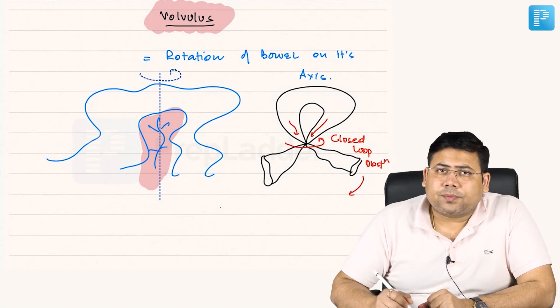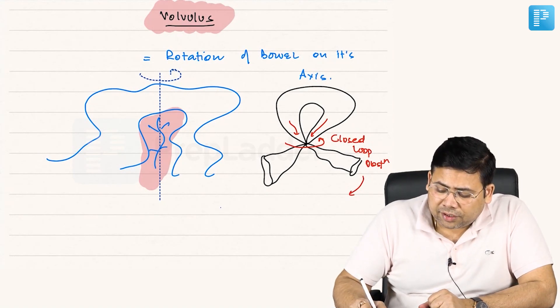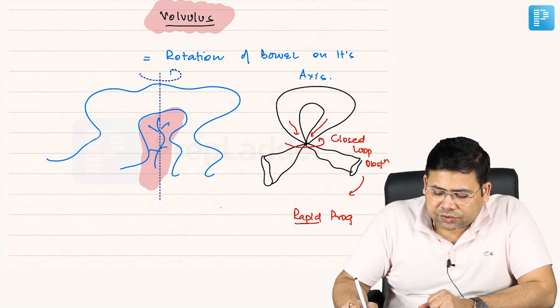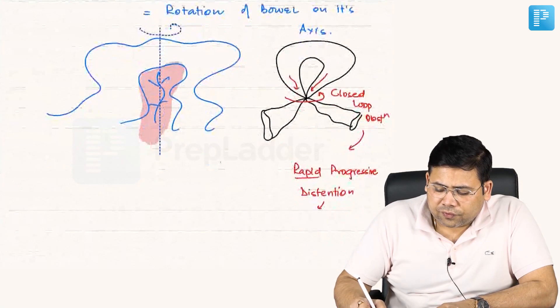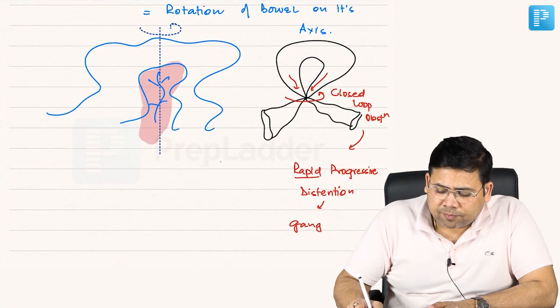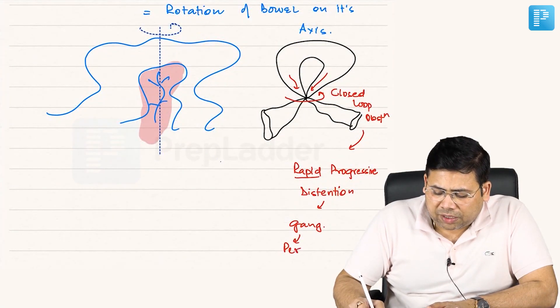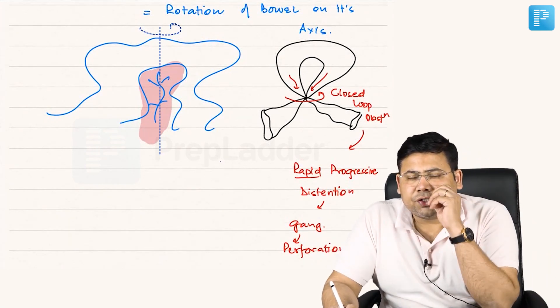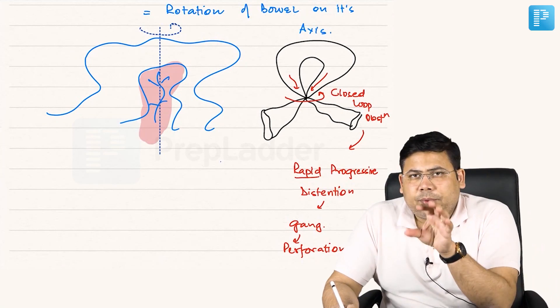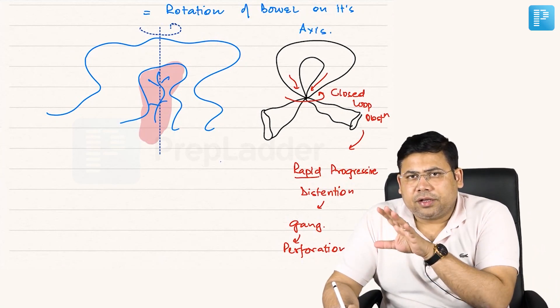Because a closed loop obstruction will have rapid progressive distension. And as there is rapid progressive distension, there is a very high chance of gangrene and hence perforation. If a bowel perforates, there will be fecal peritonitis and chances of survival of a patient in any fecal peritonitis is very, very dismal.